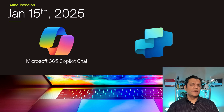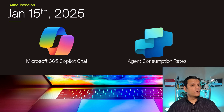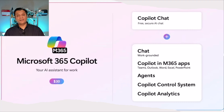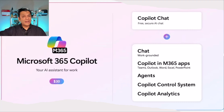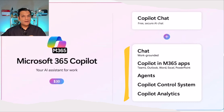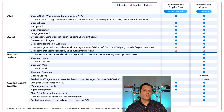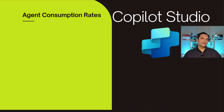There were two announcements made about Microsoft 365 Copilot Chat and the agent consumption rates of Copilot Studio. They also gave a breakdown of what the $30 per user per month actually includes. Originally we knew it was just Copilot Chat, but now we have a breakdown of all the features — including what is free and what comes with that $30 per user per month.